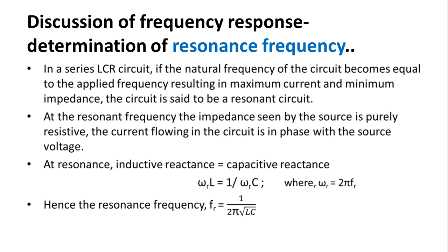For example, in radio receivers, the resonant frequency of the circuit is tuned by changing the value of C to match the frequency of the signal desired to be detected.